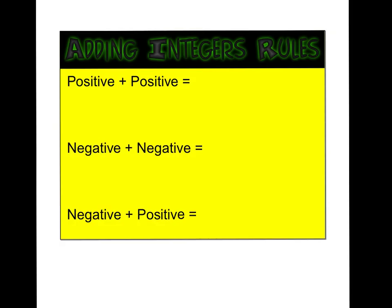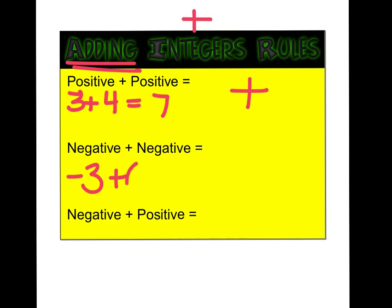All right, so let's sum this up here. When we are adding integers, and remember this only works for addition, if we're adding a positive plus a positive, like 3 plus 4, we're going to end up with a positive answer. If we add a negative plus a negative, like negative 3 plus negative 4, we end up with a negative answer every time.